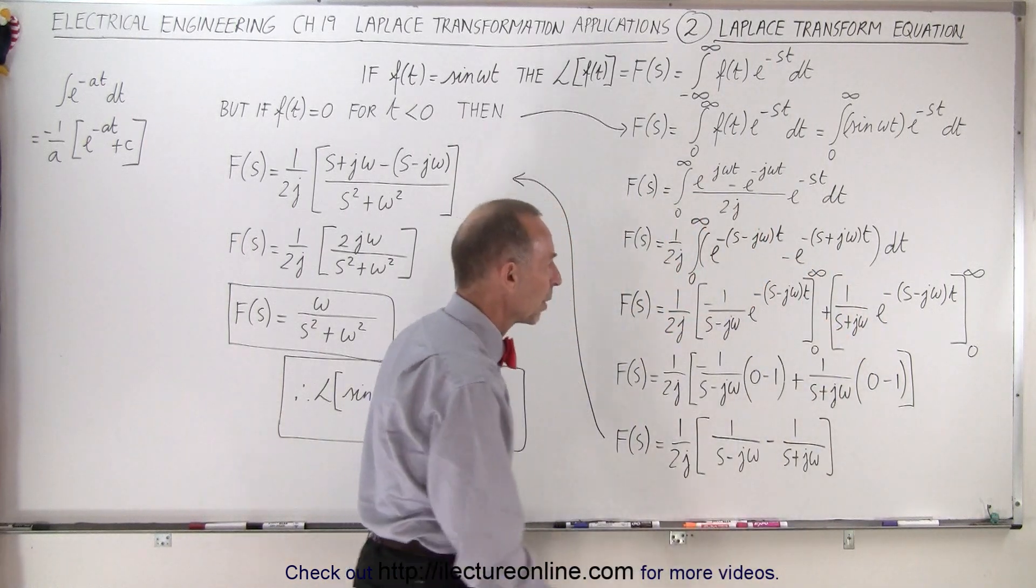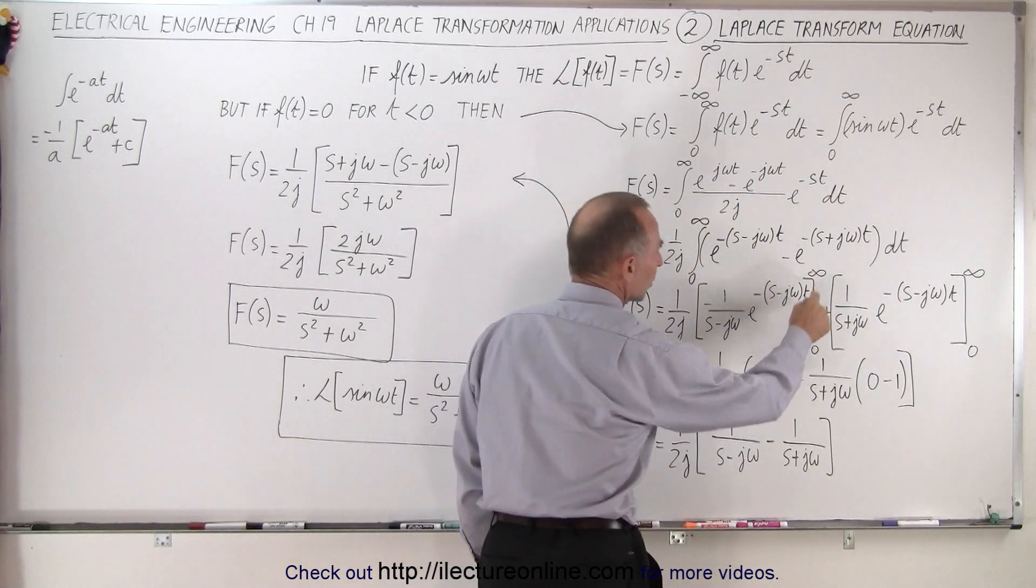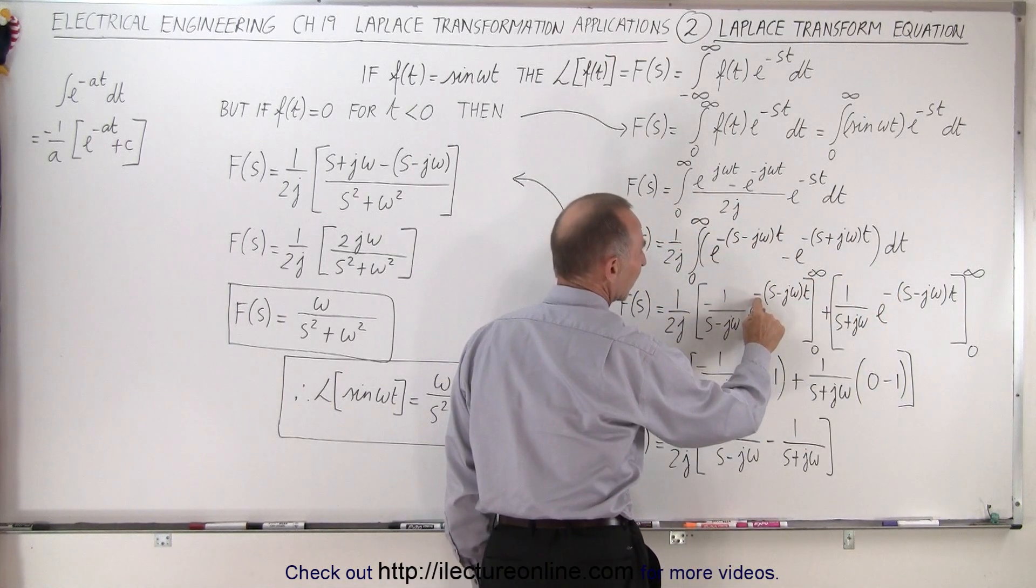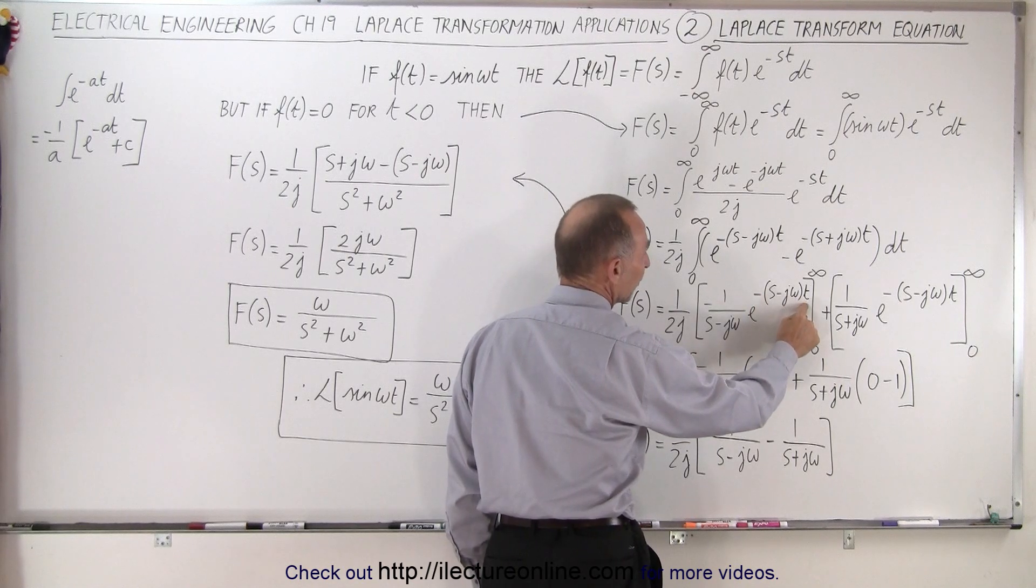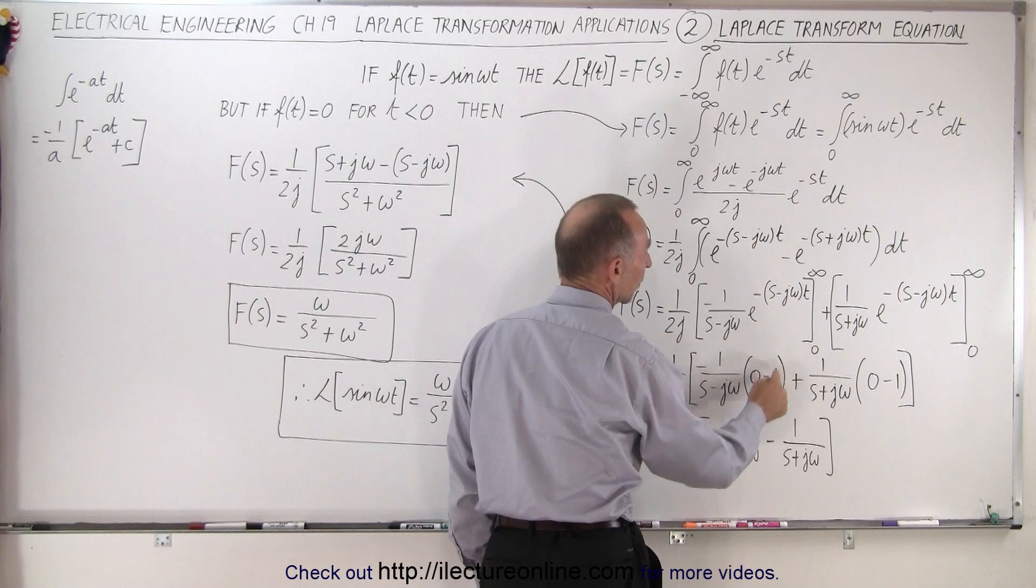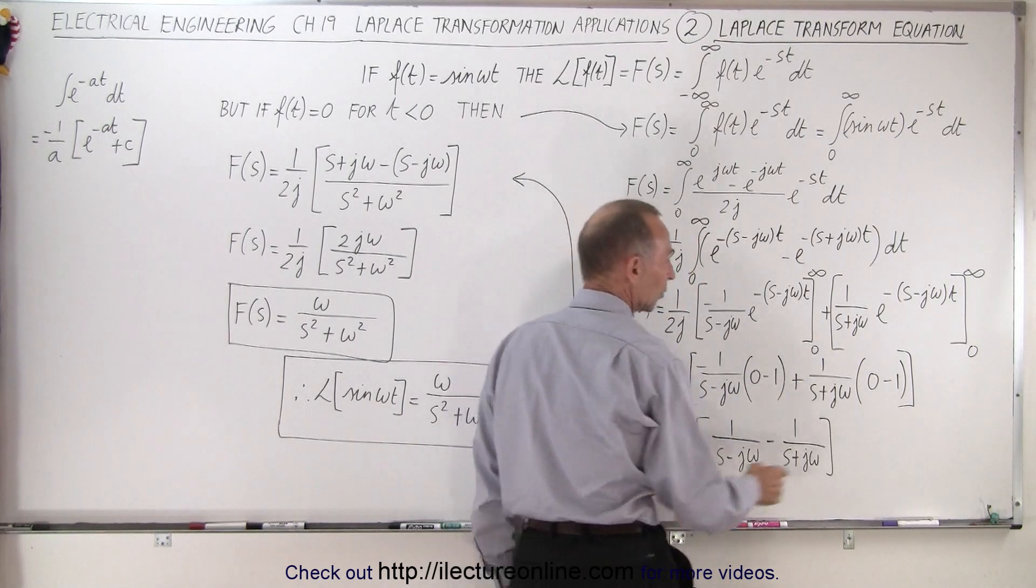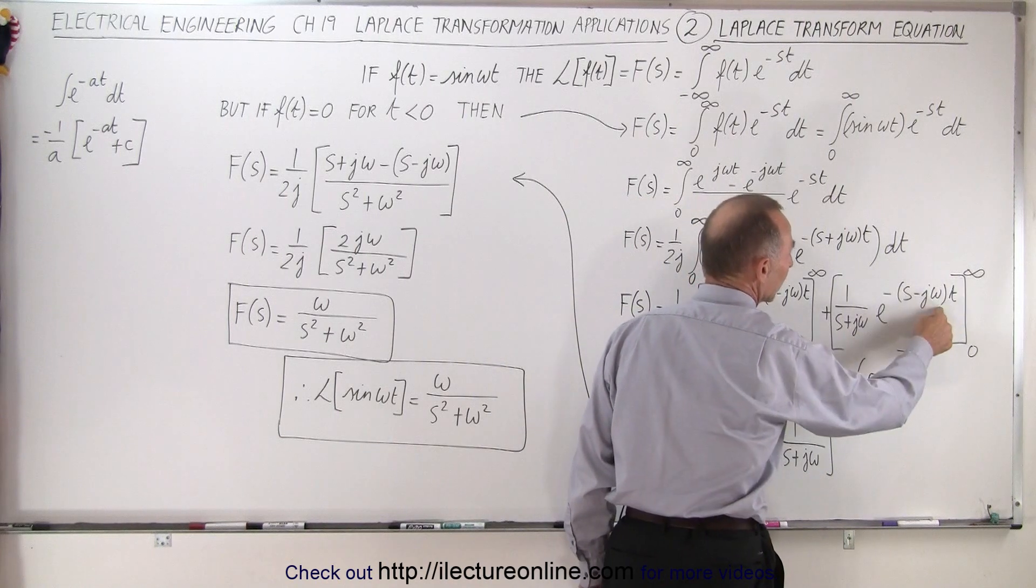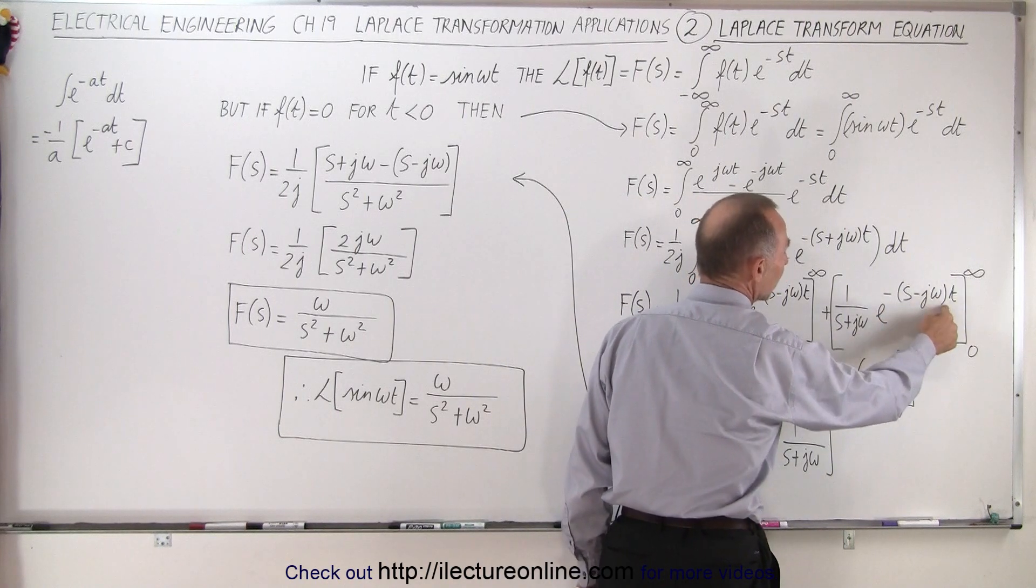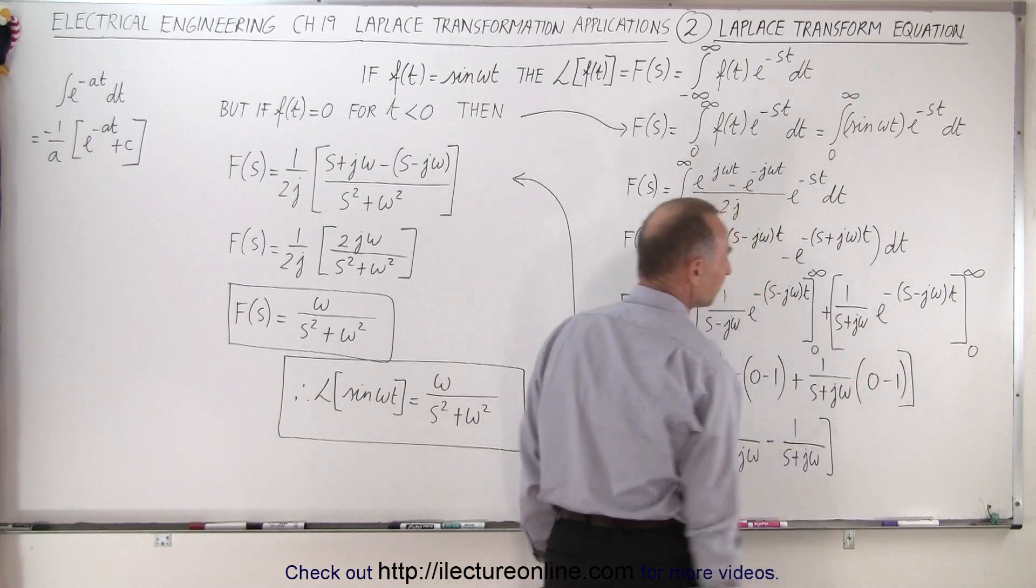We want to then find the limits of integration from 0 to infinity. Notice when we plug in the upper limit since it is a negative exponent and t goes to infinity that will become 0. When we plug in the lower limit e to the 0 becomes 1, and of course we subtract when we plug in the lower limit. Same over here, plug in the upper limit infinity e to the negative infinity is 0, and then plug in the lower limit minus e to the 0 which is minus 1.